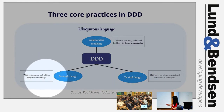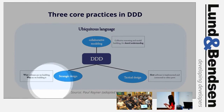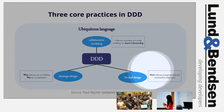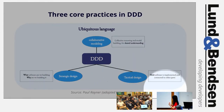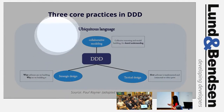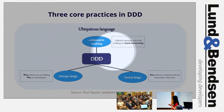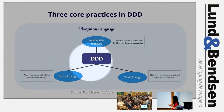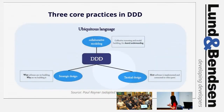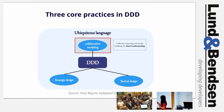Collaborative modeling forms a foundation that also feeds into strategic design and tactical DDD. Strategic design is quite intuitive: it's about why software and what software we are building. Tactical design is the more technical part — how software is implemented and connected to other parts. Things are really interconnected — you can't cleanly separate strategic DDD from tactical DDD.